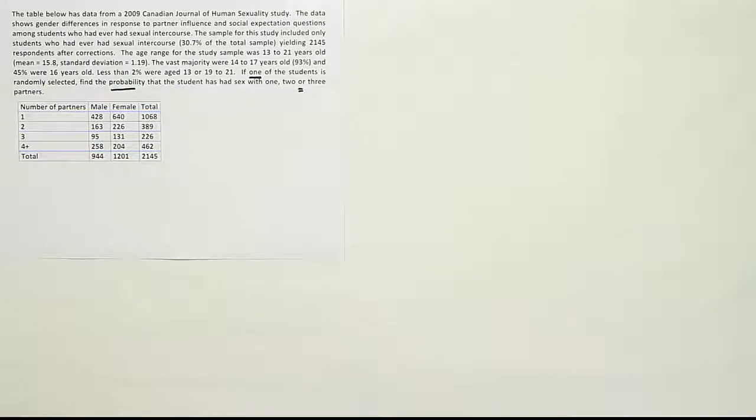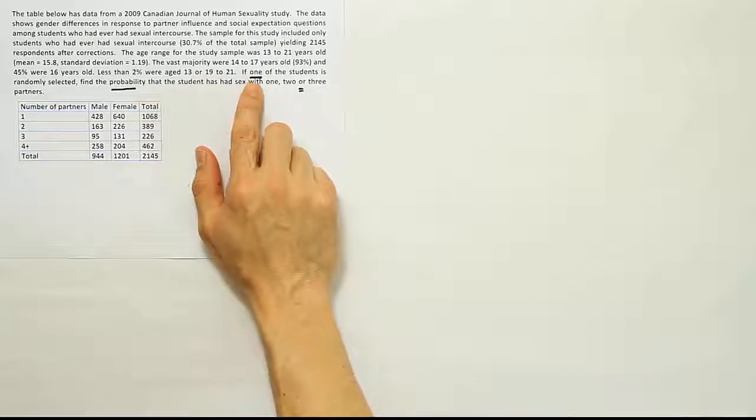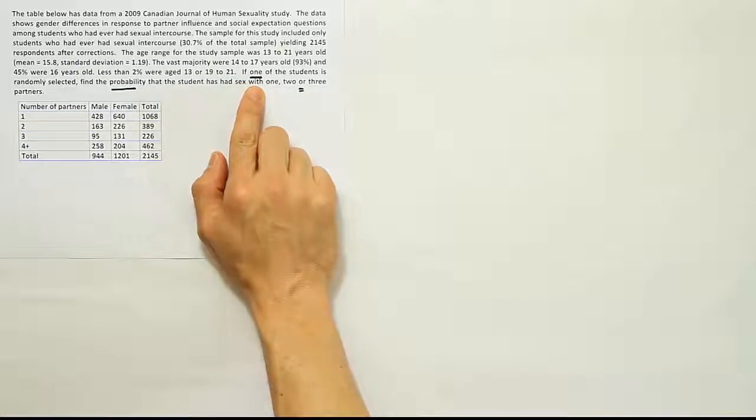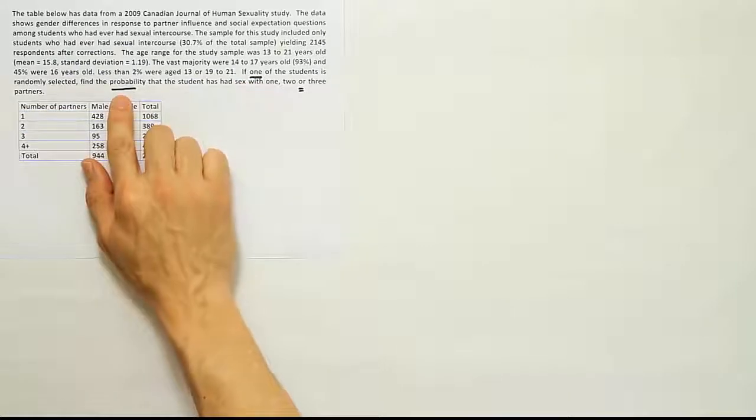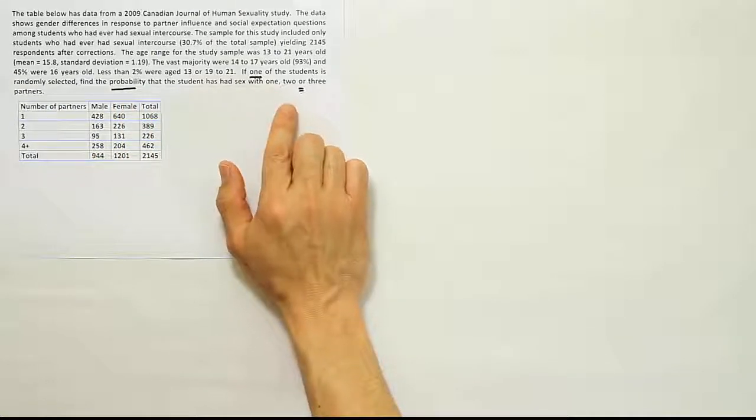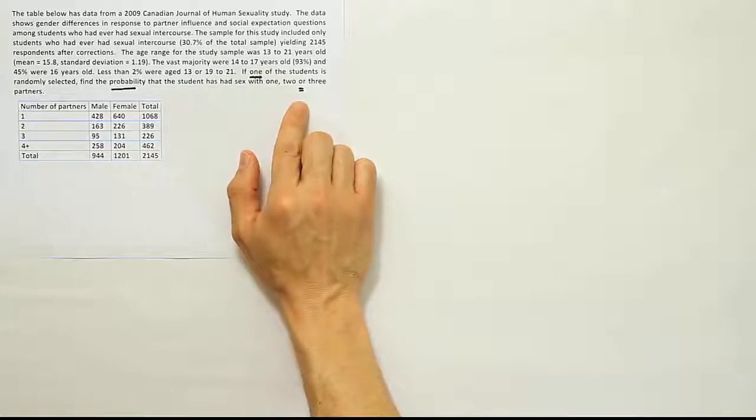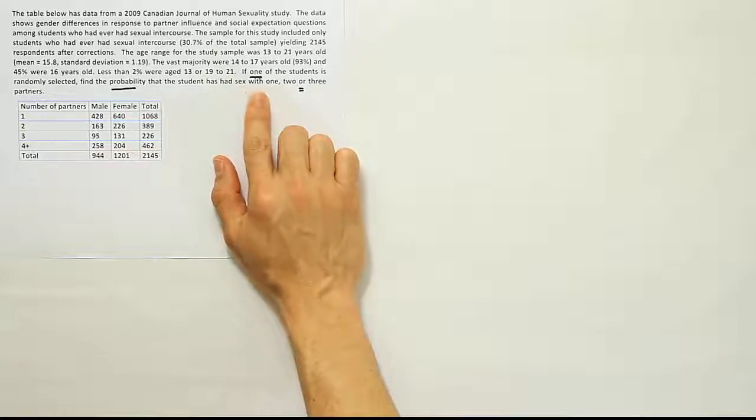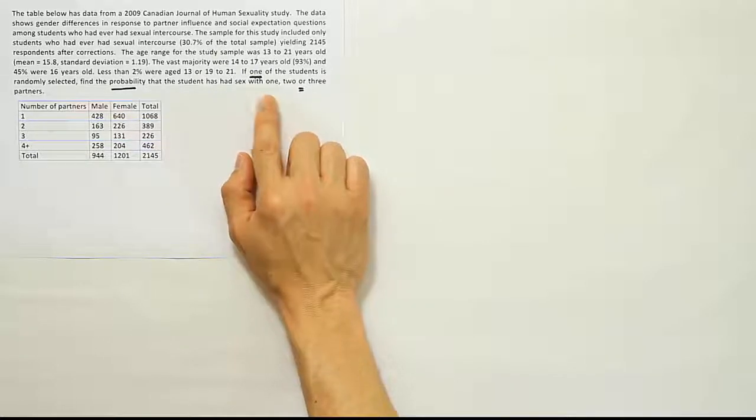I've underlined a couple of key phrases here. This statement, if one of the students is randomly selected, indicates we're only selecting one subject from the study. We're looking for the probability that the student has had sex with one, two, or three partners. The word or here is important. The fact that you're only selecting one student and you have the word or, that indicates that you're dealing with the addition rule for probability.